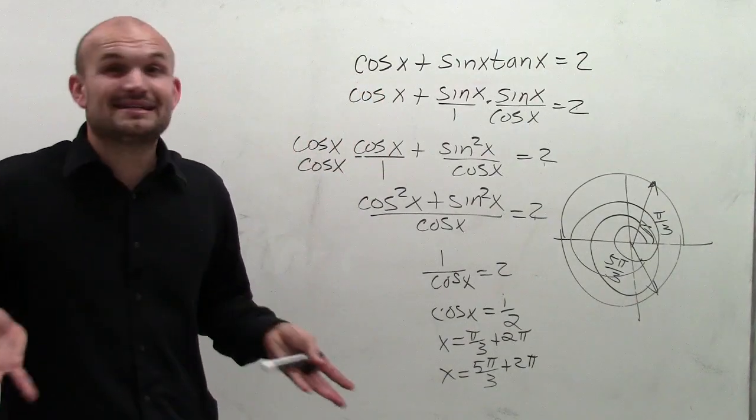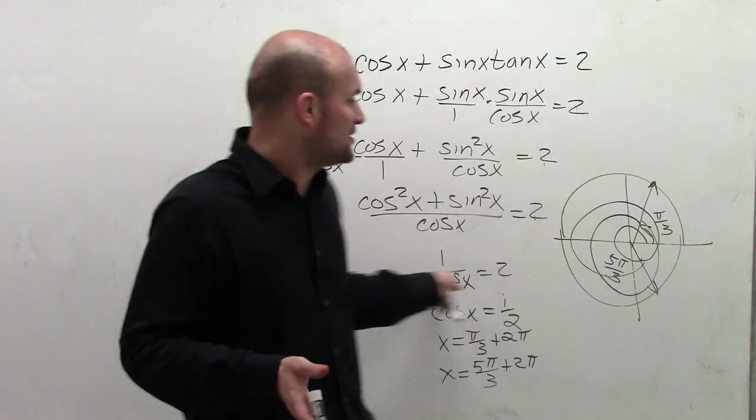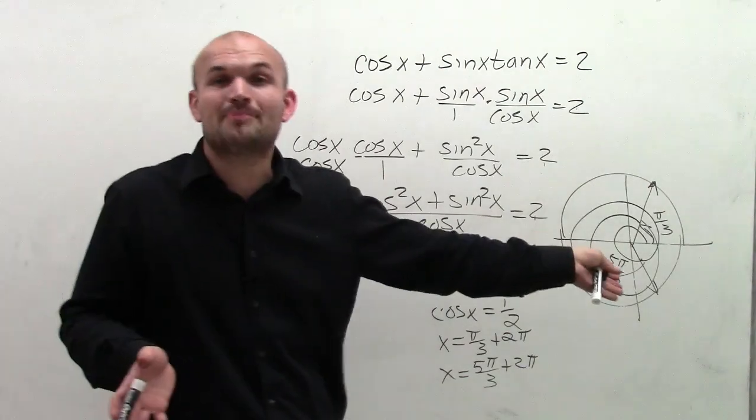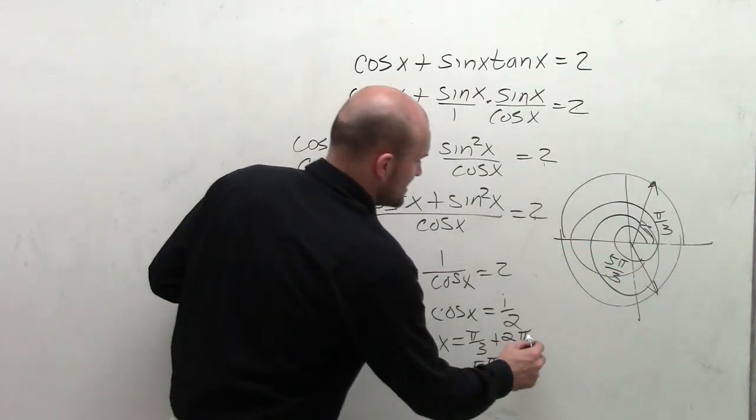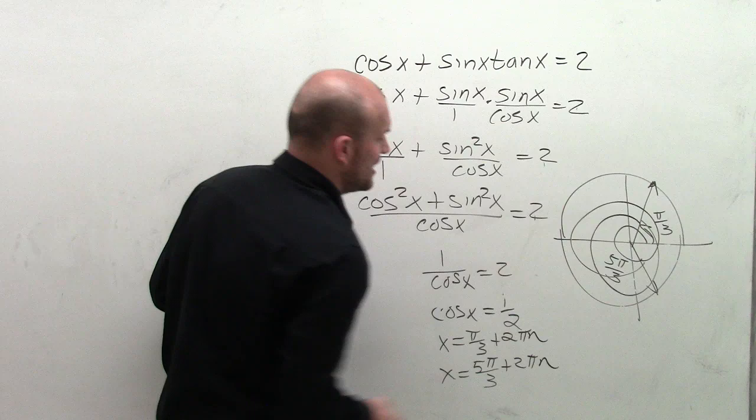And however, I don't know how many times I can keep on doing this because remember, the cosine function goes infinitely in the positive and negative direction. So I'm going to say it's going to be positive 2 pi n and positive 2 pi n.